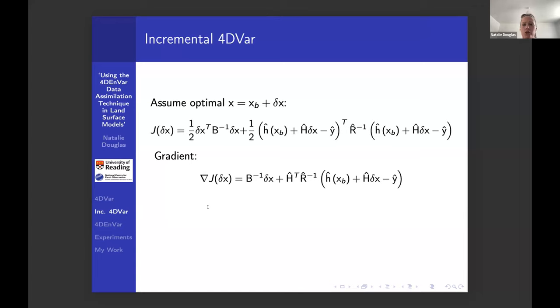If we assume that there is a small perturbation to the background state, our optimal X would just be our background state plus delta X, some small perturbation. We can linearize and turn this cost function into a quadratic one and a gradient will be linear. As you can see here in the prior term, the X minus X_B just leaves the delta X.